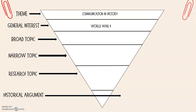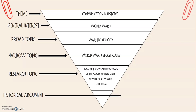Once I'm doing my research on World War II and understanding the historical context, I come across war technology and I'm very interested in that — what are we creating during World War II on both the Allied side and the Axis side? I'll need to do further research and further historical context to figure out what's going on there, which helps me come to my narrowed-down topic of World War II secret codes. What were secret codes? What is the Enigma machine? What are the Germans doing, what are the Allied powers doing, how are they communicating? This also relates back to the theme of communication in history. Gathering more historical context on secret codes helps me arrive at my research question: how did the development of coded military communication during World War II influence wartime technology?